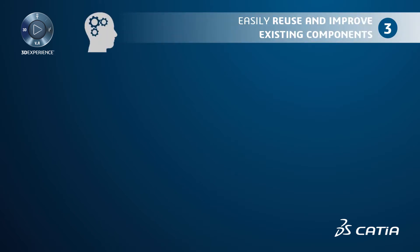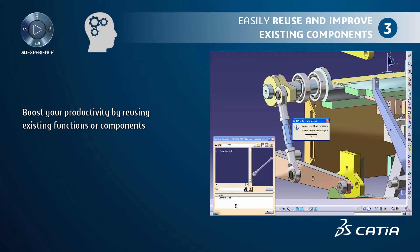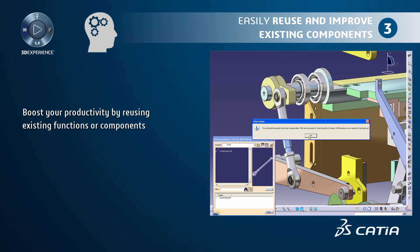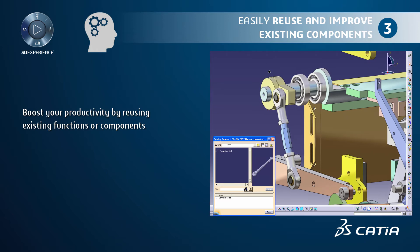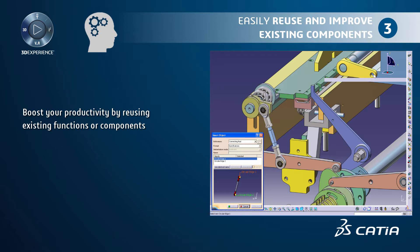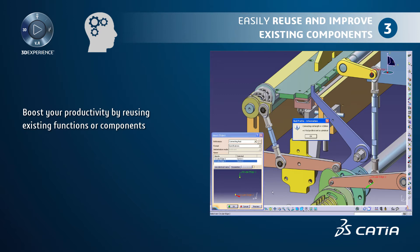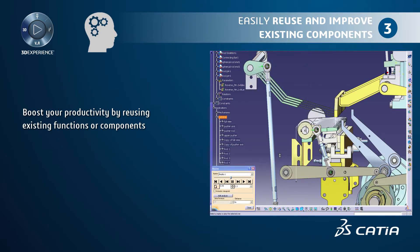Using knowledge-based templates reuse capabilities, you can boost your productivity by reusing existing functions or components that include your company's best practices. You can capitalize on your assets and generate a family of components to accelerate your design. For example, here we generate a connecting rod by reusing a smart template stored in a catalog. An embedded design rule automatically chooses the rod profile depending on the rod length. For the second generated rod, the rod profile is automatically set to a circular one since the rod length is above a specific value defined in the rule.